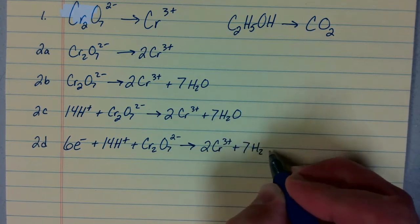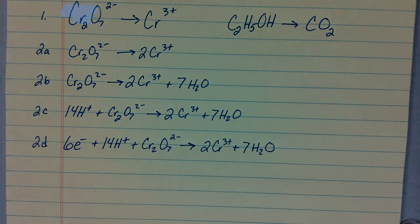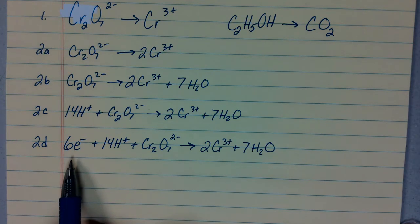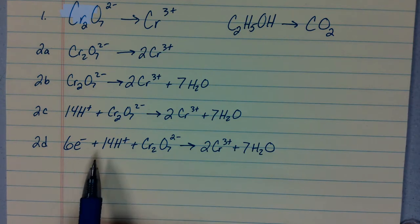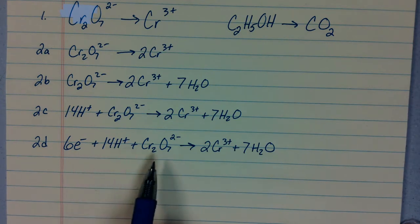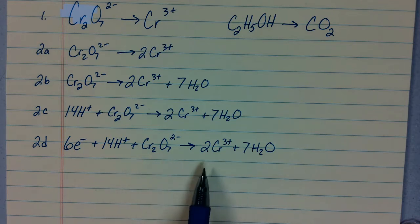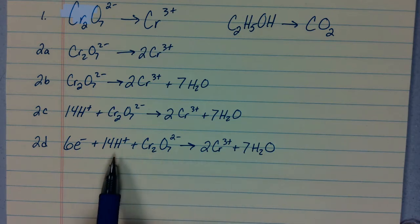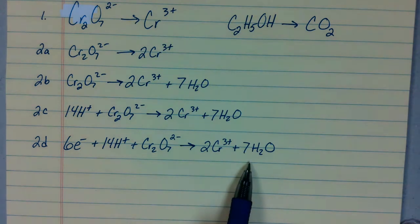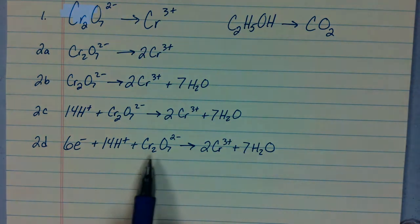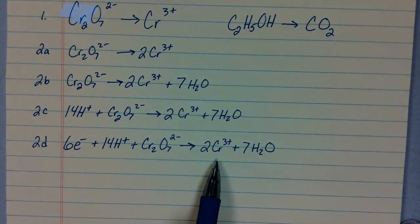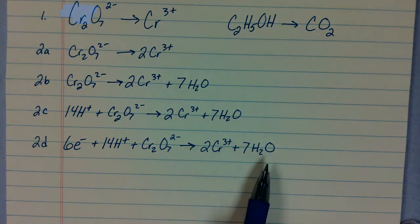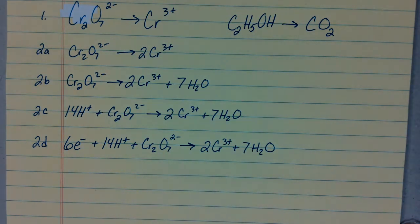Now we should check to make sure we have a completely balanced half-reaction. The total charge on the left is positive 6 and on the right positive 6 as well. There are 14 hydrogen atoms on each side, 2 chromium atoms on each side, and 7 oxygen atoms on each side. This is a balanced half-reaction.